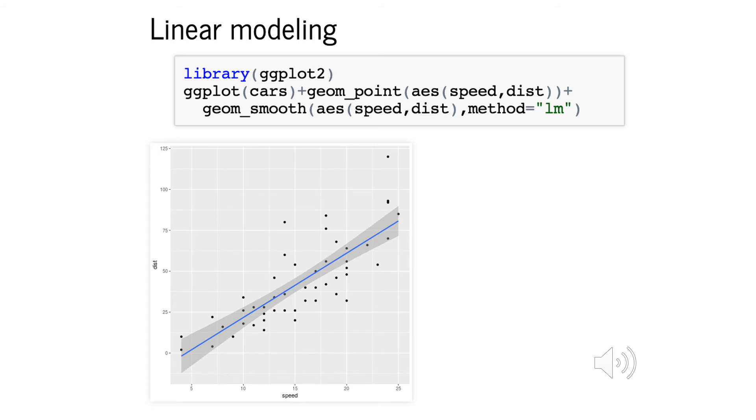To illustrate, first of all, we look again at the cars data frame, which is part of R, and we see that speed and distance may be related to each other in a linear fashion, which we plot using ggplot.